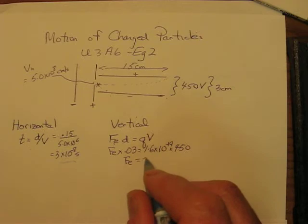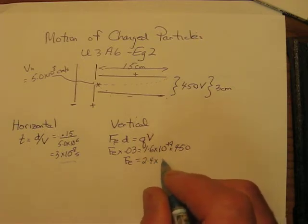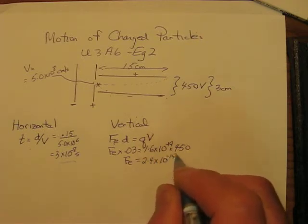When you calculate the electric force, this is the vertical electric force, you'll get 2.4 times 10 to the negative 15 newtons. Of course, that direction is upward.